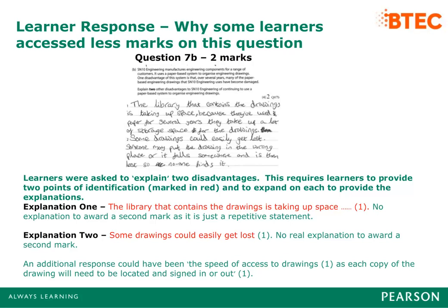Learners were asked to explain two disadvantages of paper-based systems. This requires learners to provide two points of identification and to expand on each. The majority of learners scored at least two marks, with typical responses centred around 'drawings becoming lost' or 'filing cabinets required for storage', but could not offer further explanation to warrant the extension marks. An additional response could have been: 'the speed of access to drawings' (one mark), 'as each copy of the drawing will need to be located and signed in or out' (one mark).